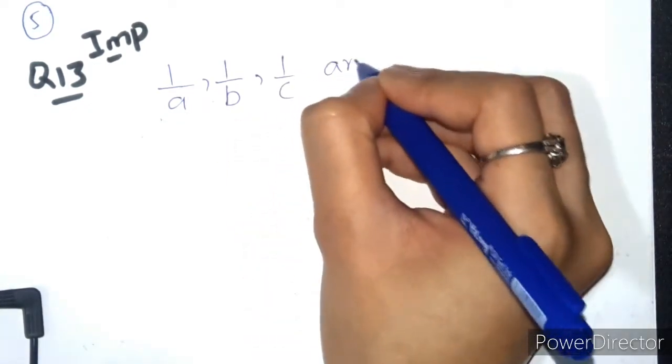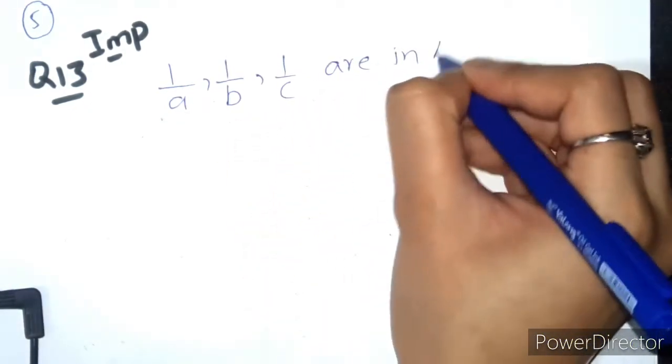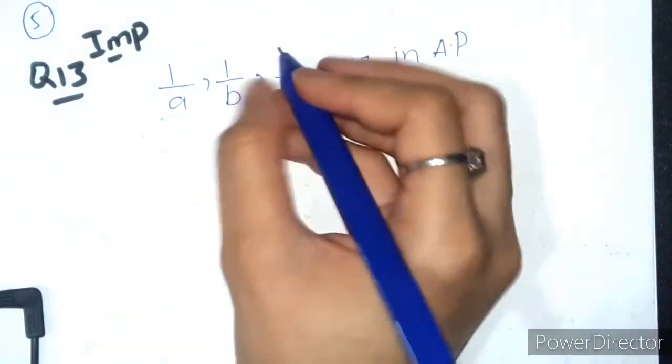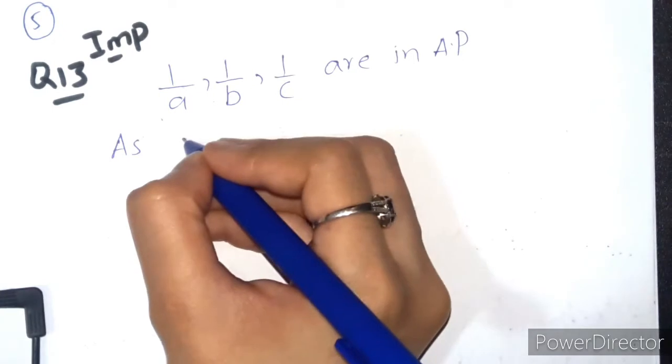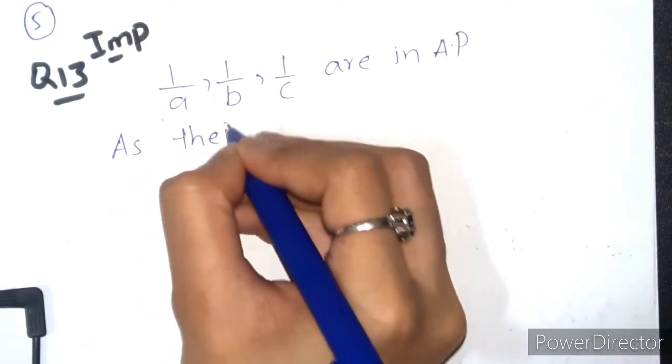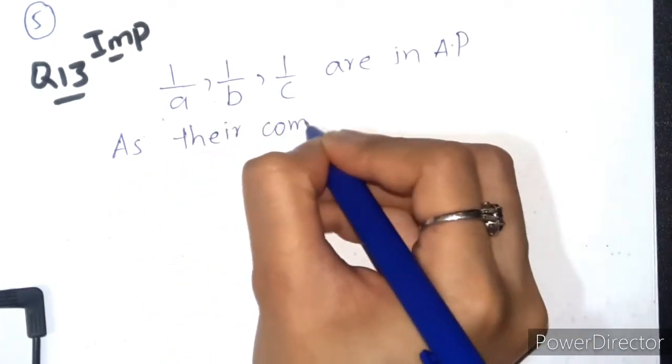If they are in arithmetic progression, then their common difference will be the same. So their common difference d is the same.